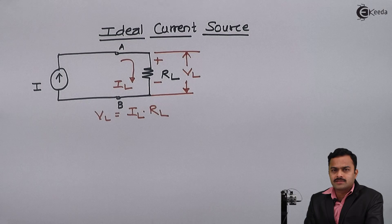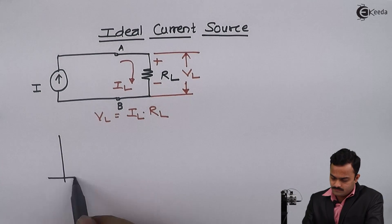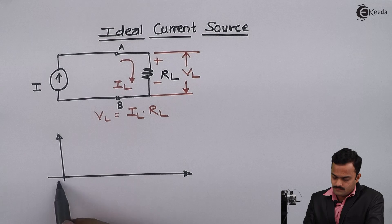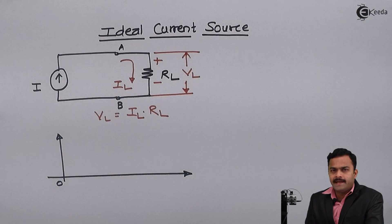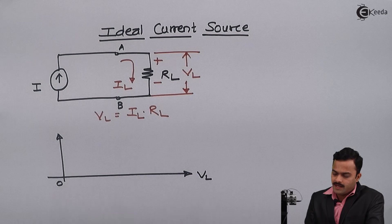Now we are going to draw the VI characteristic of this ideal current source. This time independent variable is VL and dependent on value of VL, I will have values of IL.